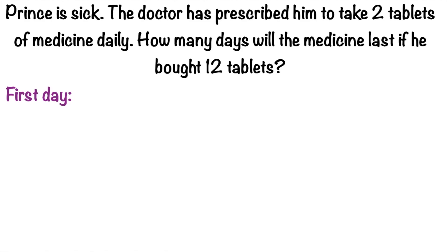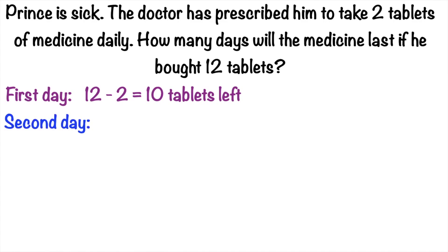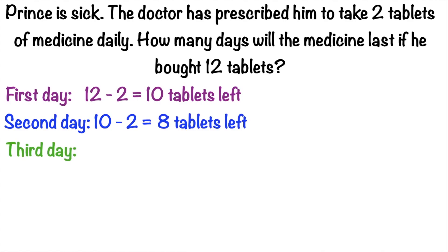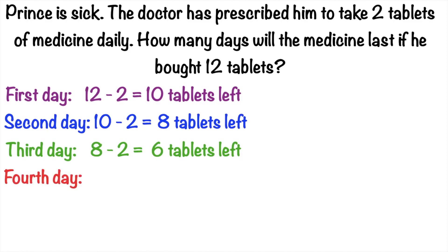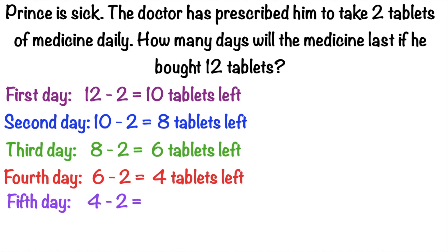For the first day, we have 12 minus 2 tablets is equal to 10 tablets left. For the second day, we have 10 minus 2 tablets is equal to 8 tablets left. For the third day, we have 8 minus 2 tablets is equal to 6 tablets left. For the fourth day, we have 6 minus 2 tablets is equal to 4 tablets left. For the fifth day, we have 4 minus 2 tablets is equal to 2 tablets left.